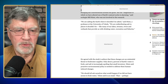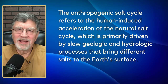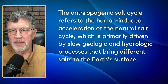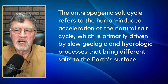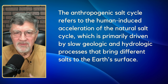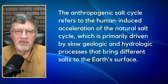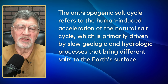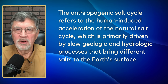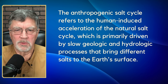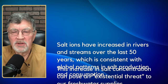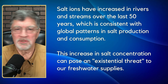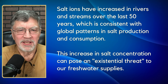To recap: the anthropogenic salt cycle refers to the human-induced acceleration of the natural salt cycle, which was primarily driven by slow geologic and hydrologic processes. Man's activities have really accelerated that cycle, and now our water sources are getting saltier. Salt ions have increased in rivers and streams over the last 50 years, consistent with global patterns in salt production and consumption — a one-to-one correlation, and road salting is a big part of that.